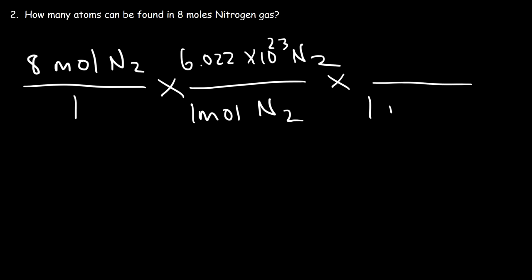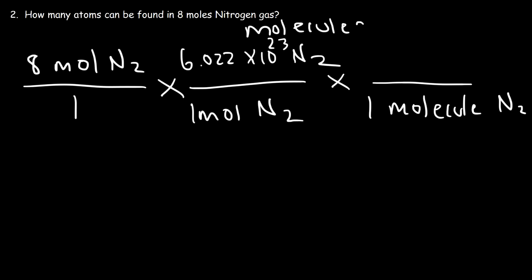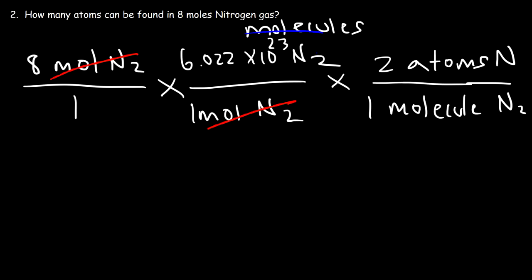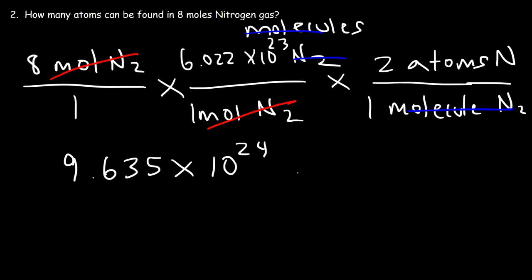So rewriting this: put one molecule on the bottom — that Avogadro's number represents molecules because N₂ is a molecule — and put two atoms of N on top. So it's going to be 8 times Avogadro's number times 2, giving a final answer of 9.635 times 10 to the 24 atoms of nitrogen.